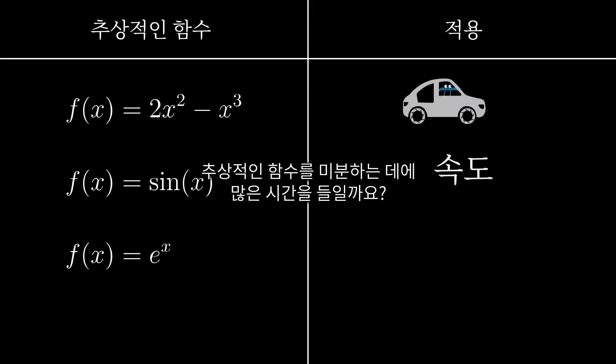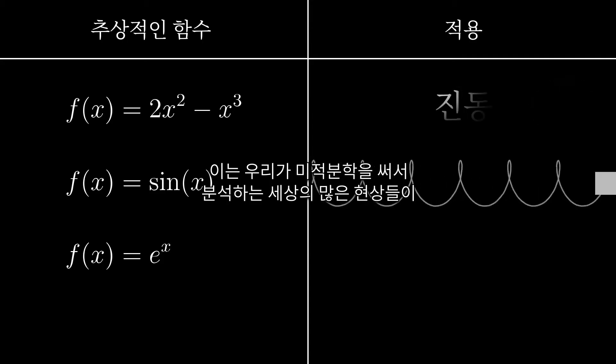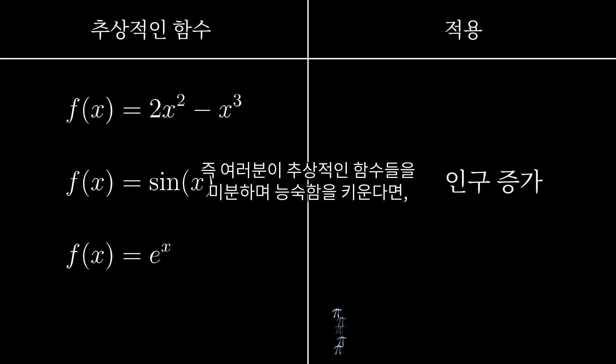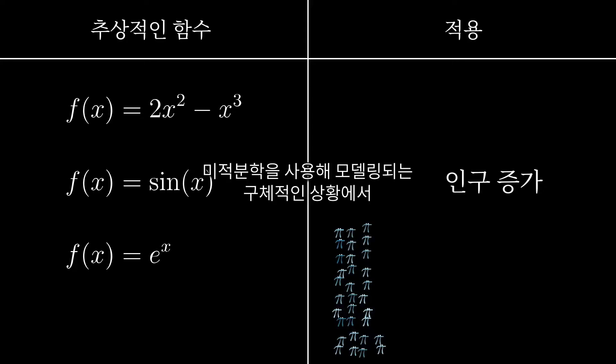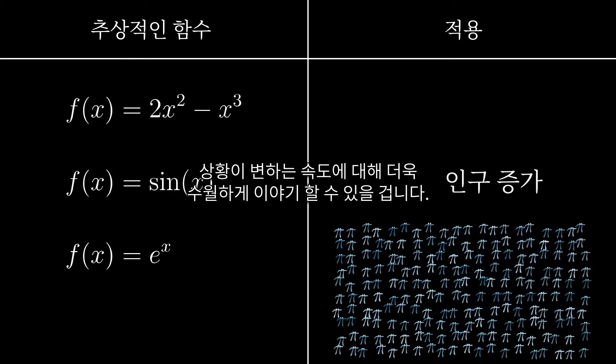It's because a lot of real-world phenomena, the sort of things that we want to use calculus to analyze, are modeled using polynomials, trigonometric functions, exponentials, and other pure functions like that. So if you build up some fluency with the ideas of rates of change for those kinds of pure abstract functions, it gives you a language to more readily talk about the rates at which things change in concrete situations that you might be using calculus to model.